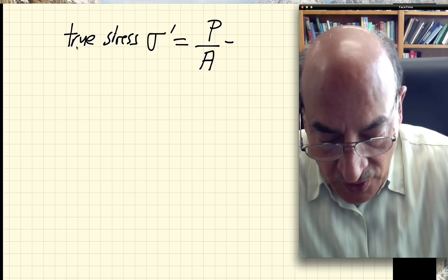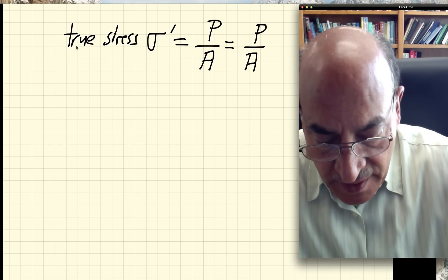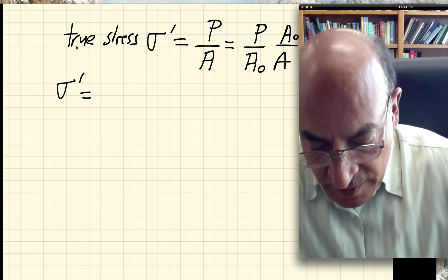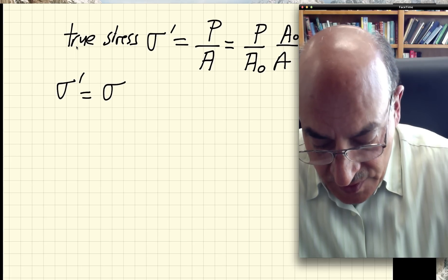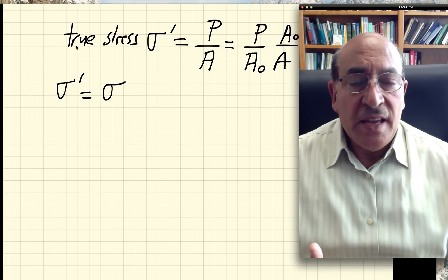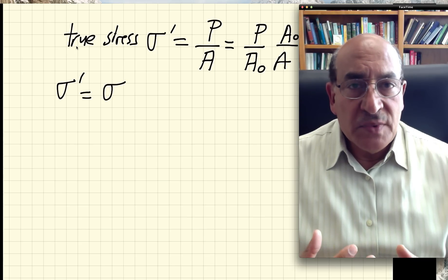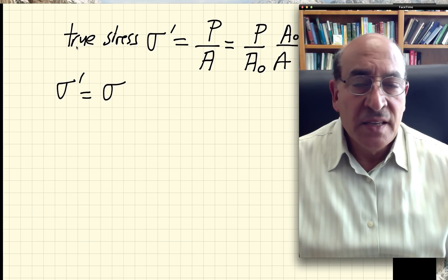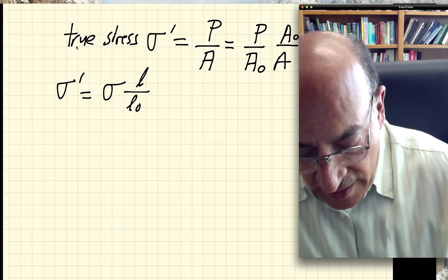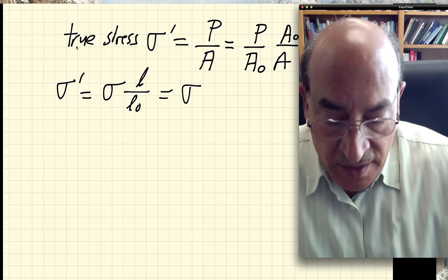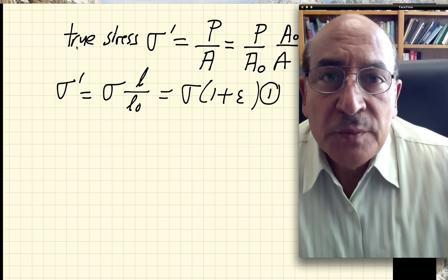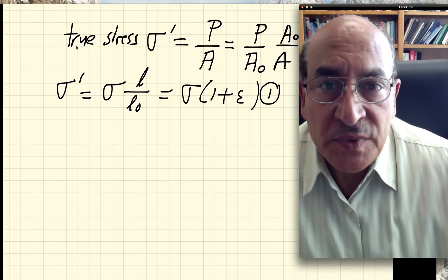To connect true stress to engineering stress, we divide and multiply by A₀: σ' = (P/A₀) × (A₀/A). Since P/A₀ = σ (engineering stress), we need A₀/A. Using volume conservation — l·A = l₀·A₀ — we get A₀/A = l/l₀ = 1 + ε. Therefore: σ' = σ(1 + ε).